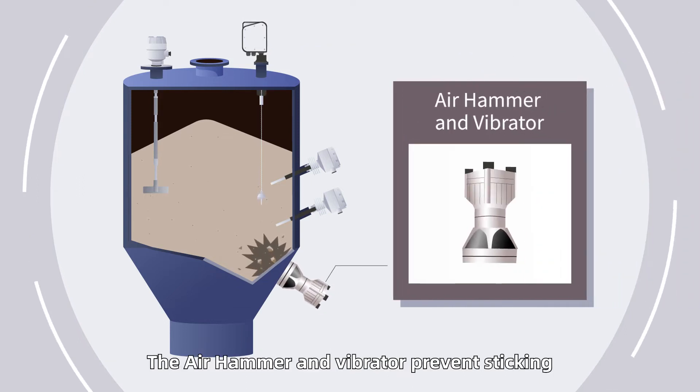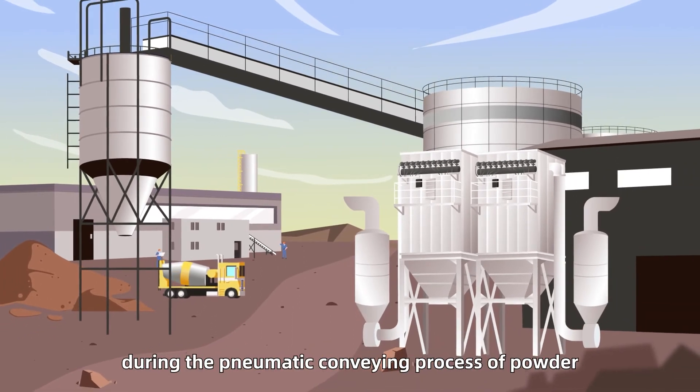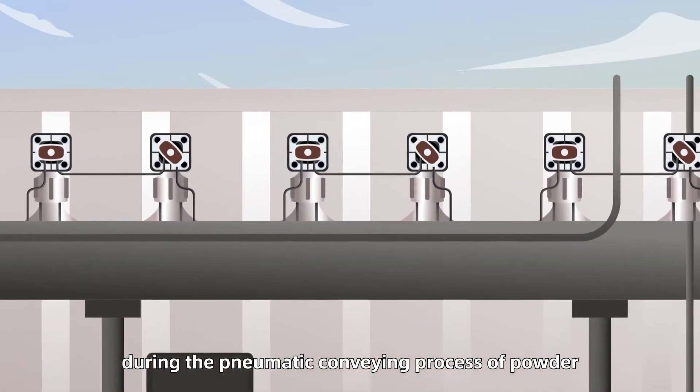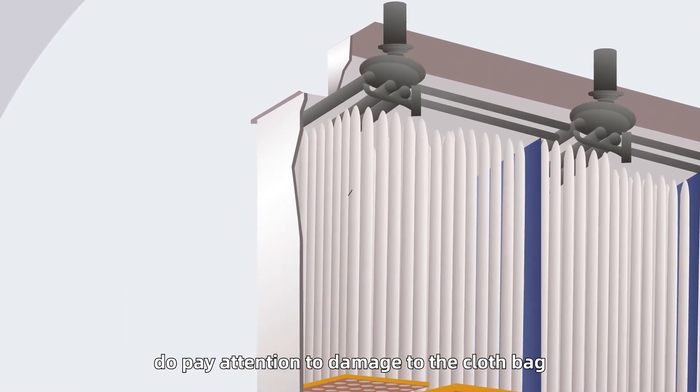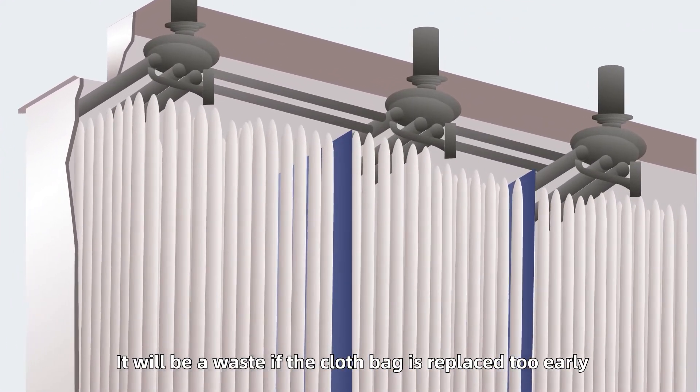The air hammer and vibrator prevent sticking. The dust collector prevents dust from leaking out during the pneumatic conveying process of powder. However, do pay attention to damage to the cloth bag. It will be a waste if the cloth bag is replaced too early.